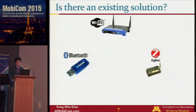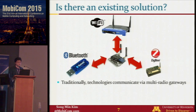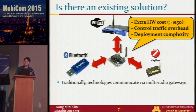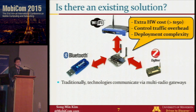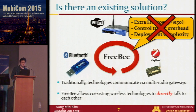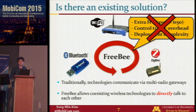Is there an existing solution enabling communication between wireless technologies? Traditionally, this is done by using multi-radio gateways. However, this approach suffers from several issues including extra hardware cost — about $150 on Amazon right now — and causes control traffic overhead as well as deployment complexity. Freebie allows coexisting wireless technologies to directly talk to each other, thereby addressing all these issues.